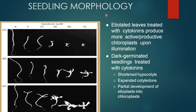Seedling morphology: etiolated leaves treated with cytokinin produce more active or productive chloroplasts upon illumination. Dark-germinated seedlings treated with cytokinin have shown shortened hypocotyl and expanded cotyledon, with partial development of etioplasts into chloroplasts.